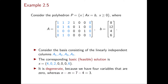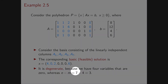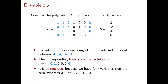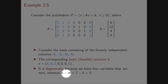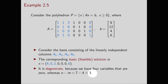Now we should check for degeneracy. This is a degenerate basic solution because we have four variables that are at zero, and 4 is strictly larger than n minus m, which for this problem is 7 minus 4, because we have seven variables and four equations, which equals 3.